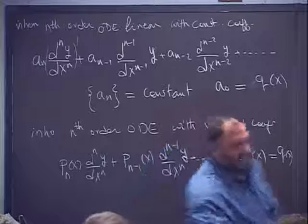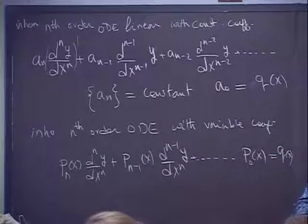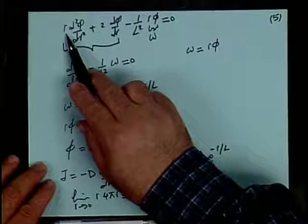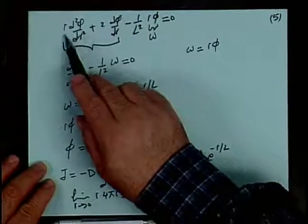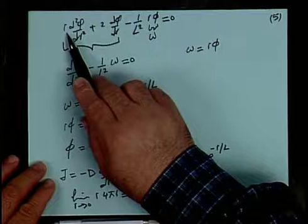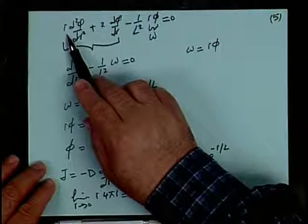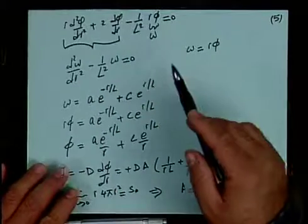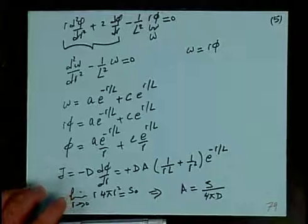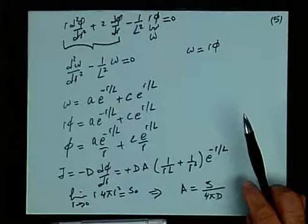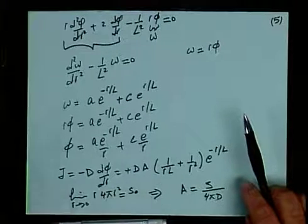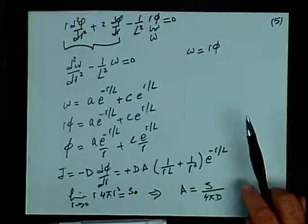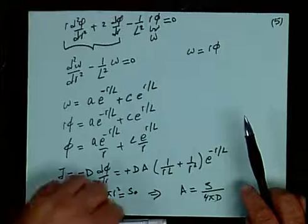In the spherical diffusion problem, we have r as the independent variable. Even though r appears in only one term, it is still a variable-coefficient ODE. One method of solving variable-coefficient ODEs is to try a change of variable — see if you can transform it to constant-coefficient form. This is the trick. Making omega equal to r times phi transforms the equation from variable-coefficient to constant-coefficient. Otherwise, you could use the cylindrical case, where the equation takes the form of a Bessel equation, which is recognized as having a known series solution.